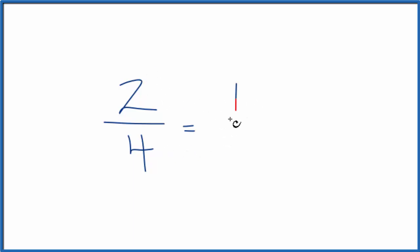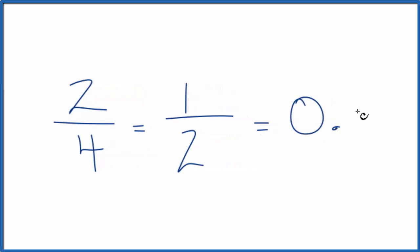2 divided by 2, that equals 1. 4 divided by 2, that equals 2. So 2 fourths and 1 half, those are equivalent fractions. They both equal 0.5.